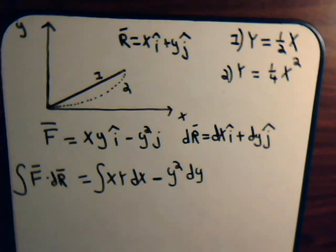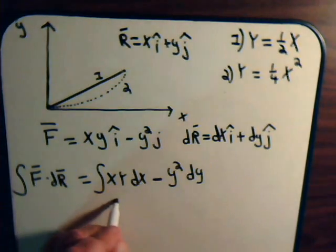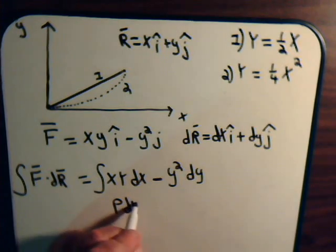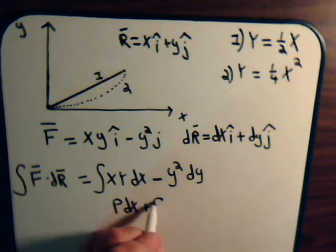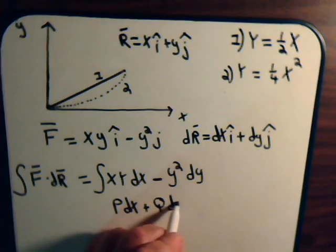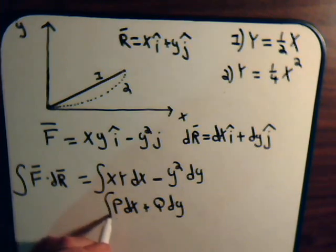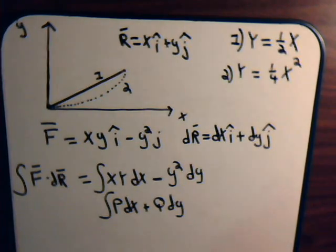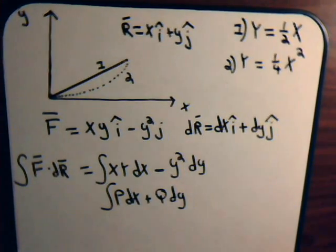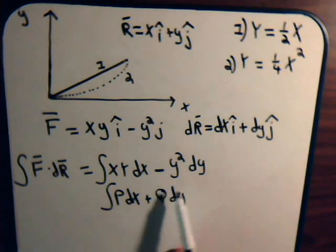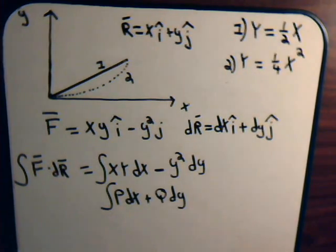And notice our line integral is in the general form p dx plus q dy. As you saw in the last video, this and this are general expressions for a line integral. Here, p, that's xy, and q, for this problem, would be minus y squared.